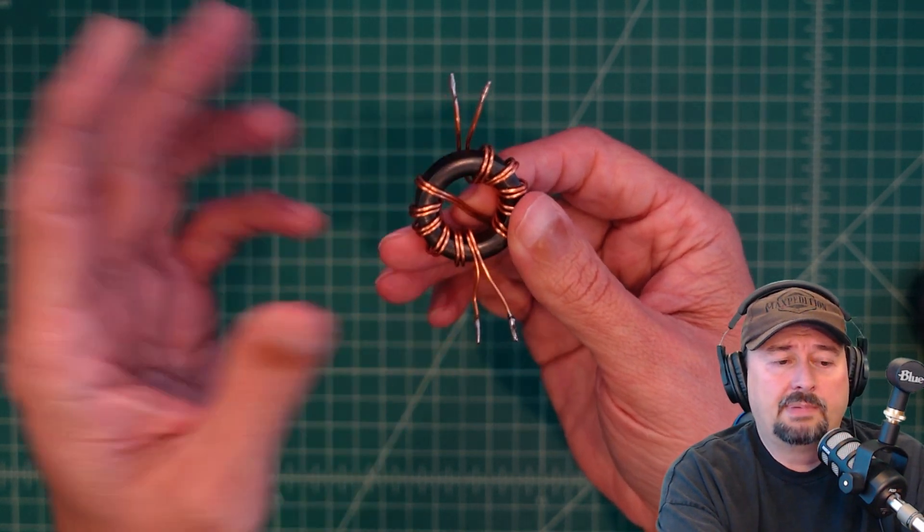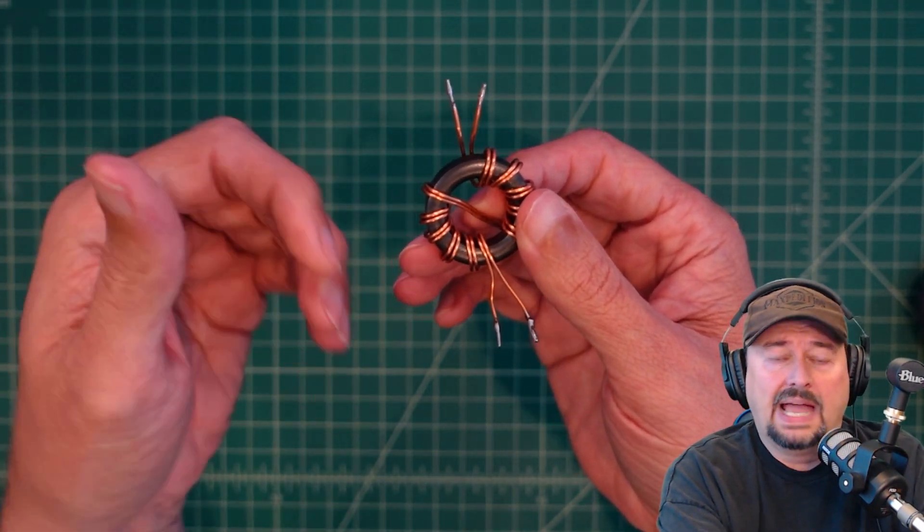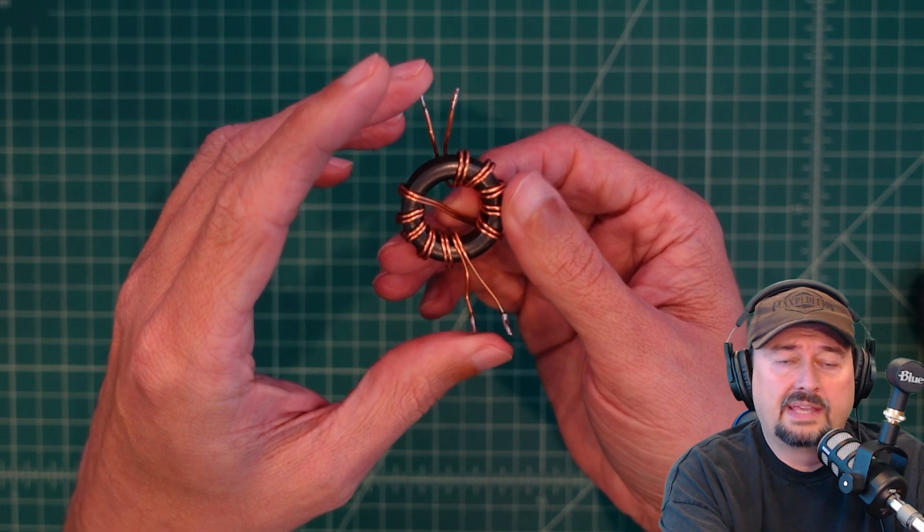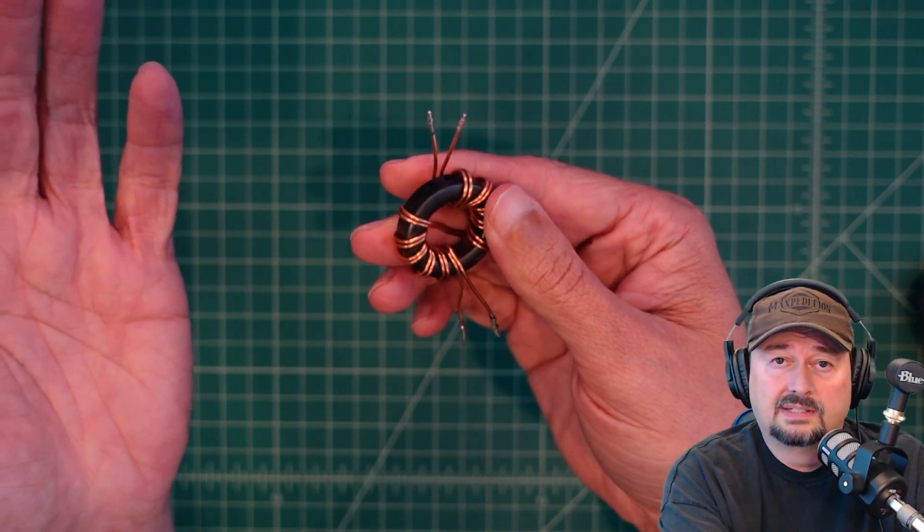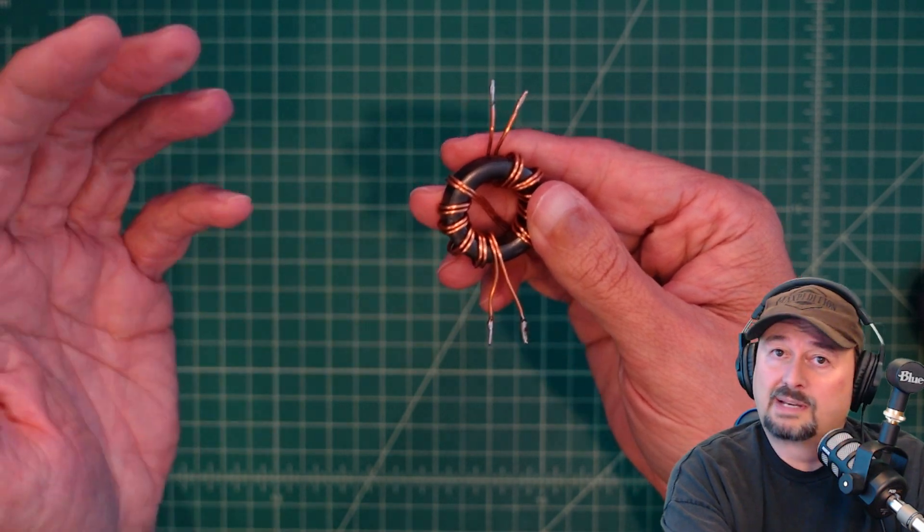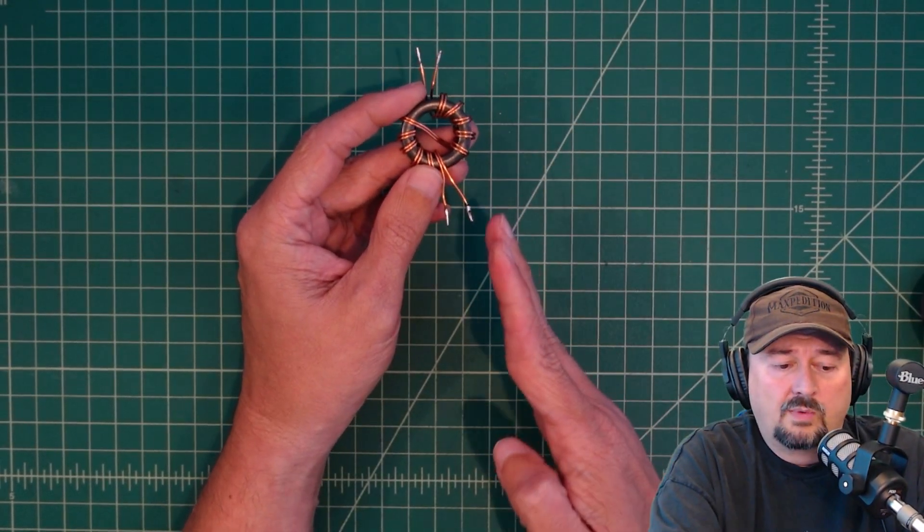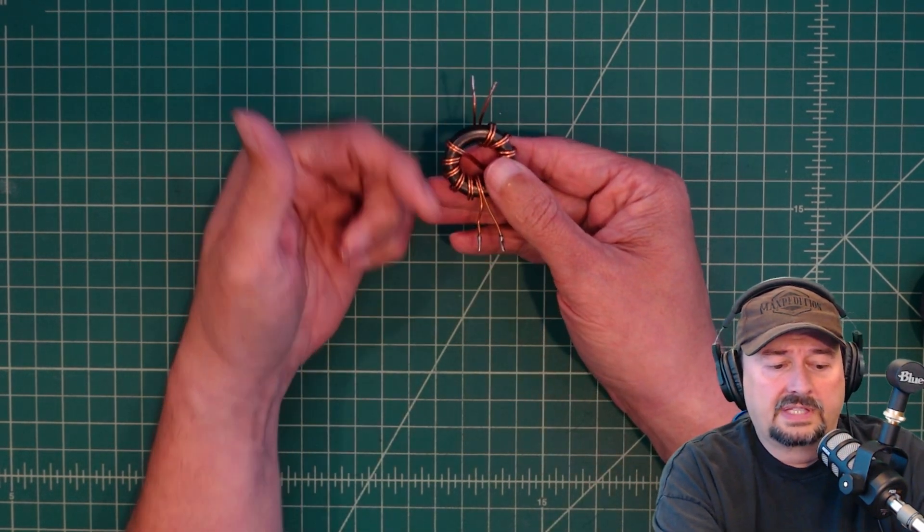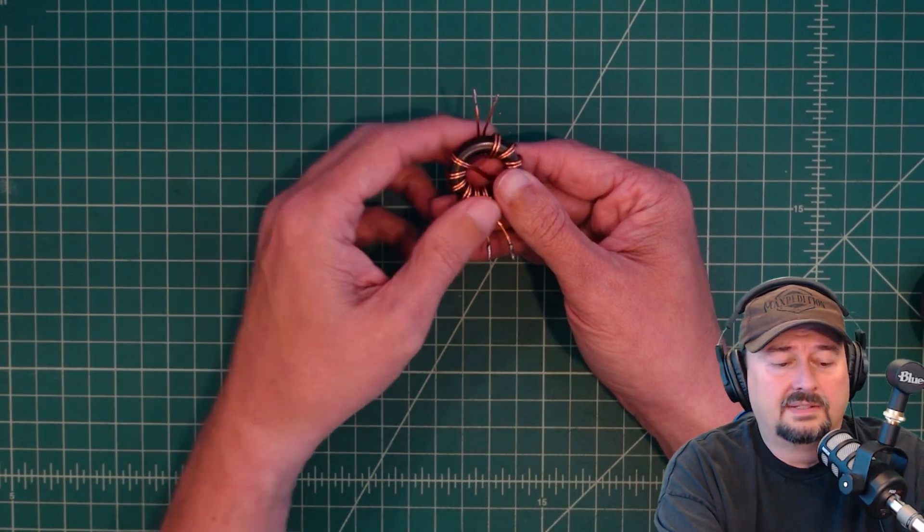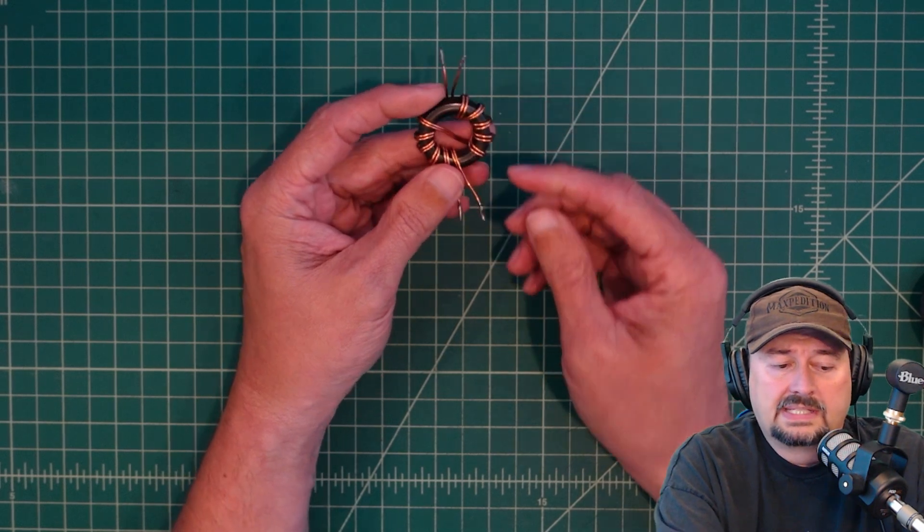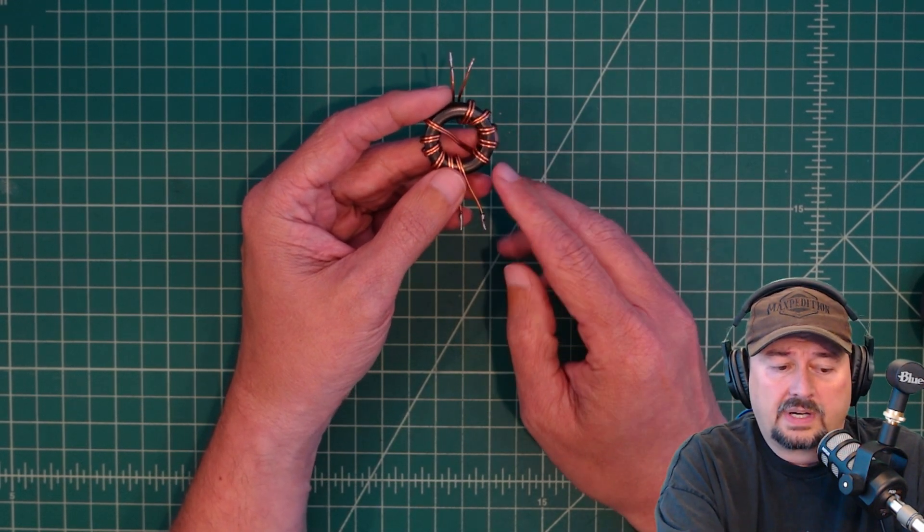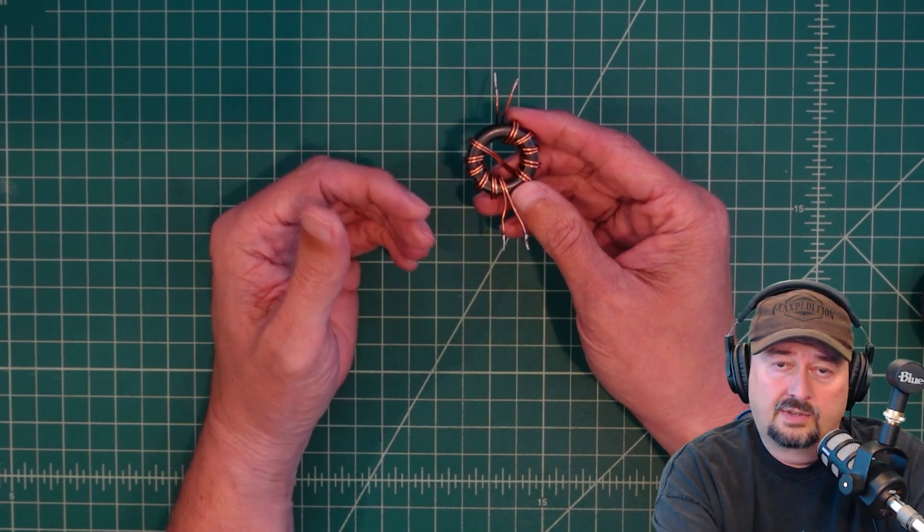And what can happen is that when your current is looking to come back, it looks for the path of least resistance. And sometimes that's on the outside of the shield. Sometimes it's on the inside of the shield. Sometimes it's on both. So the way that we make this core is that when we have current that's going out and we have current that's coming in in equal magnitudes, what happens is that the reactance of this core cancels the current coming in the other direction out.